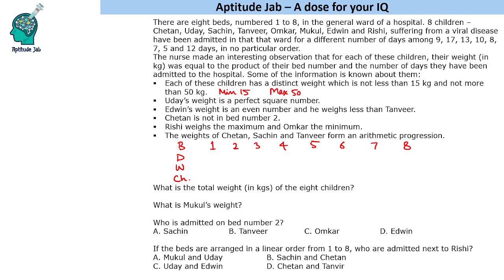Now first thing is minimum 15, maximum 50. So bed number 1, the person should be 17 because all other products give less than 15. So 17 will go here.